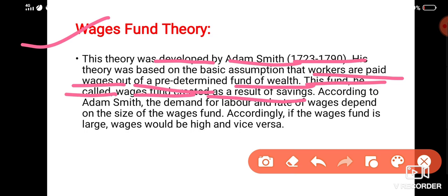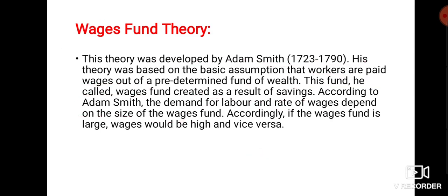The fund is called the wage fund, created as a result of savings — meaning profit earned and saved. According to Adam Smith, the demand of labor and the rate of wages depends on the size of the wage fund. If the wage fund is more, then wages will be more; if the wage fund is less, then wages will be less.